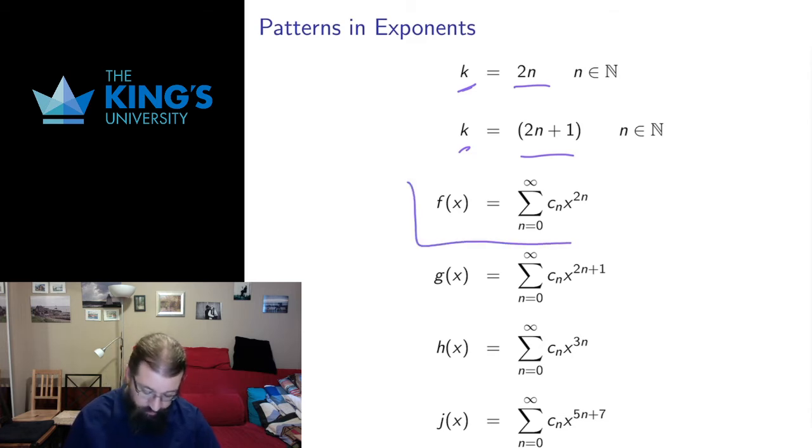So if I wanted to write a series which had only even non-zero terms, so that all the odd coefficients were zero, I had no odd powers in my expansion, I'd write it as the sum n equals zero to infinity x to the 2n.